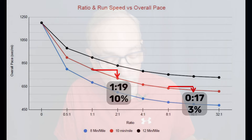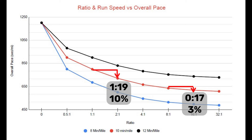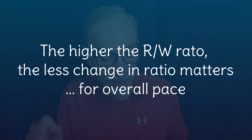Here are two concrete examples at a 10-minute-per-mile running speed. Going from a one-to-one ratio to a two-to-one ratio reduces overall pace by about 1 minute 19 seconds — roughly a 10% improvement, which is substantial. However, going from an eight-to-one to a 16-to-one ratio — also doubling — only improves overall pace by 17 seconds, less than 3%. If you remember nothing else from this video: the higher the ratio, the less changing the ratio will help improve your overall pace.